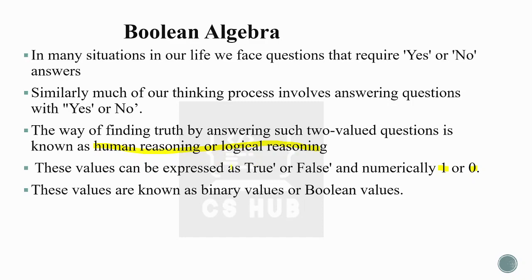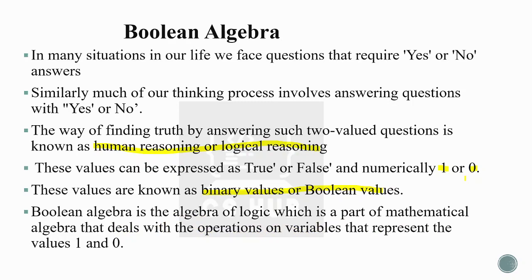Logical reasoning is a way of finding answers by answering two-valued questions. Binary value or Boolean value is 1 or 0 — 1 and 0 are binary values or Boolean values, representing true or false. Boolean algebra deals with operations on variables that represent the values 1 and 0. 1 and 0 are the only values in Boolean algebra.